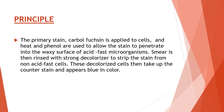Carbolfuchsin stain is lipid-soluble and contains phenol, which helps the stain penetrate the cell wall. This is further assisted by the addition of heat in the form of steam, which helps loosen the waxy layer and promotes entry of the primary stain inside the cell. The smear is then treated with a strong decolorizer, which strips the stain from non-acid-fast cells but does not permeate the cell wall of acid-fast organisms. The decolorized non-acid-fast cells then take up the counter stain, which is methylene blue or malachite green.